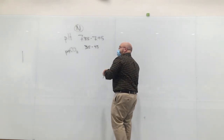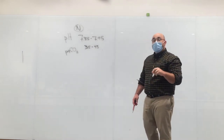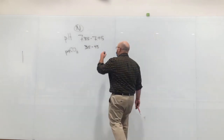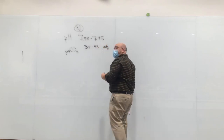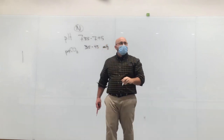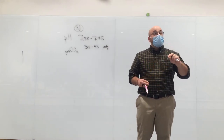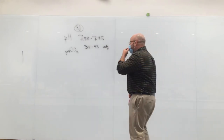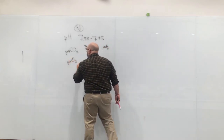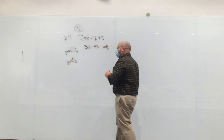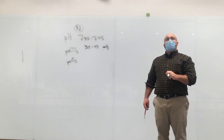PaCO2 is measured in mmHg, which is a pressure — they call it partial pressure. That is a pressure, not a volume. So let's look at PaO2, partial pressure of oxygen in the arterial system.